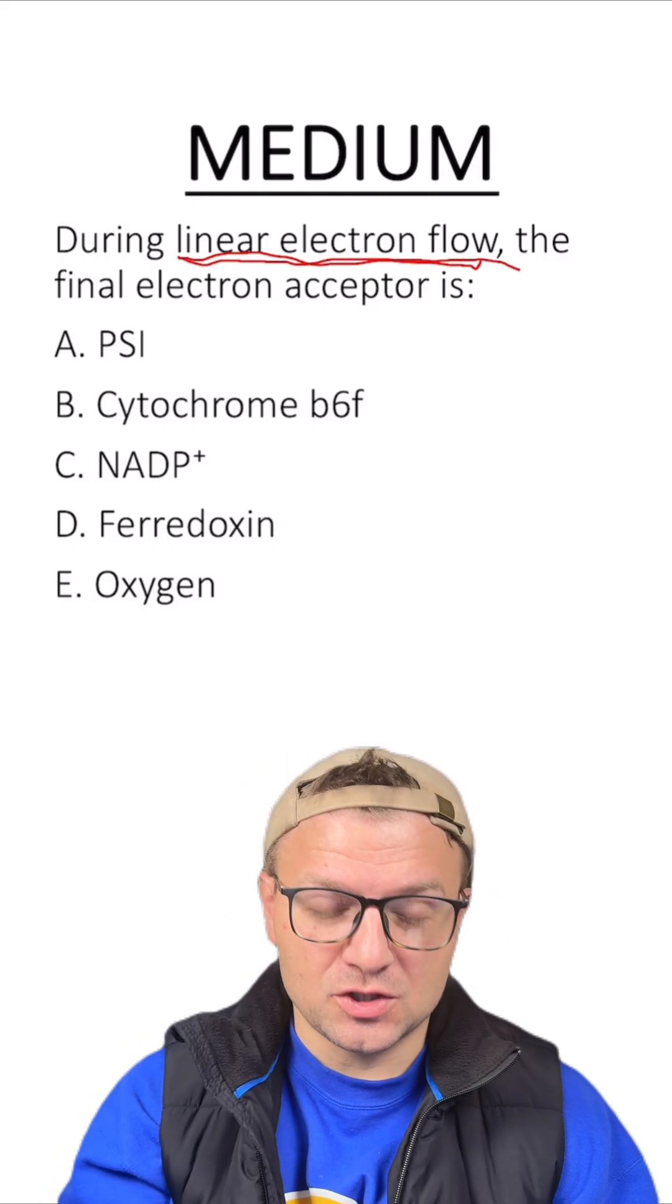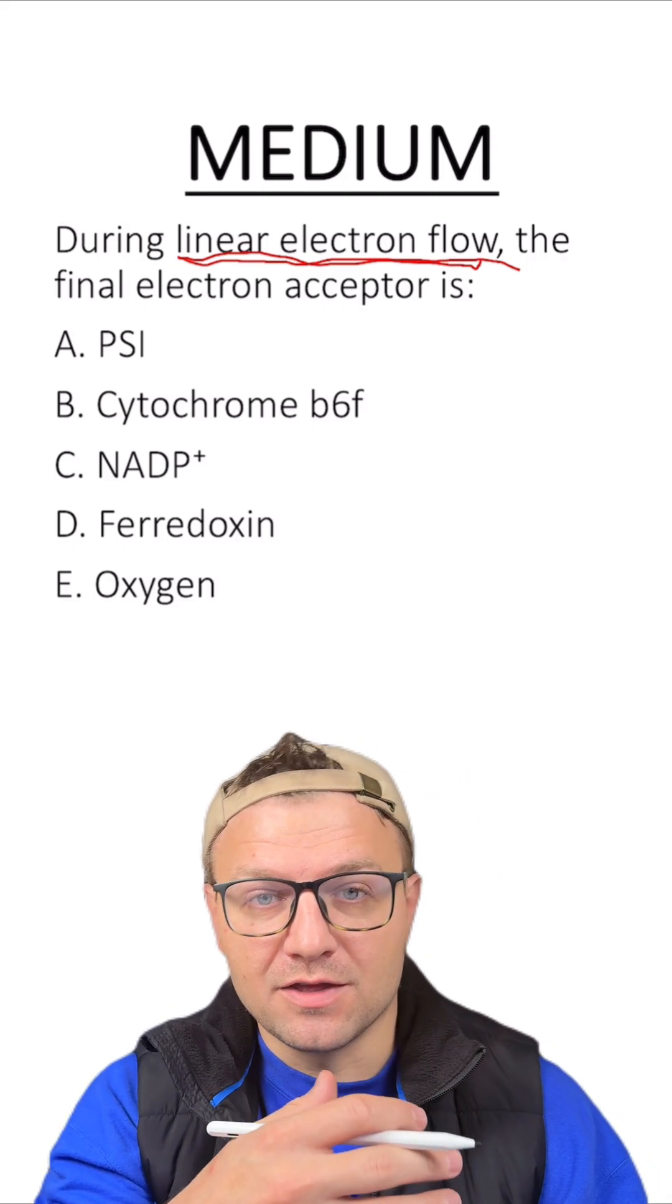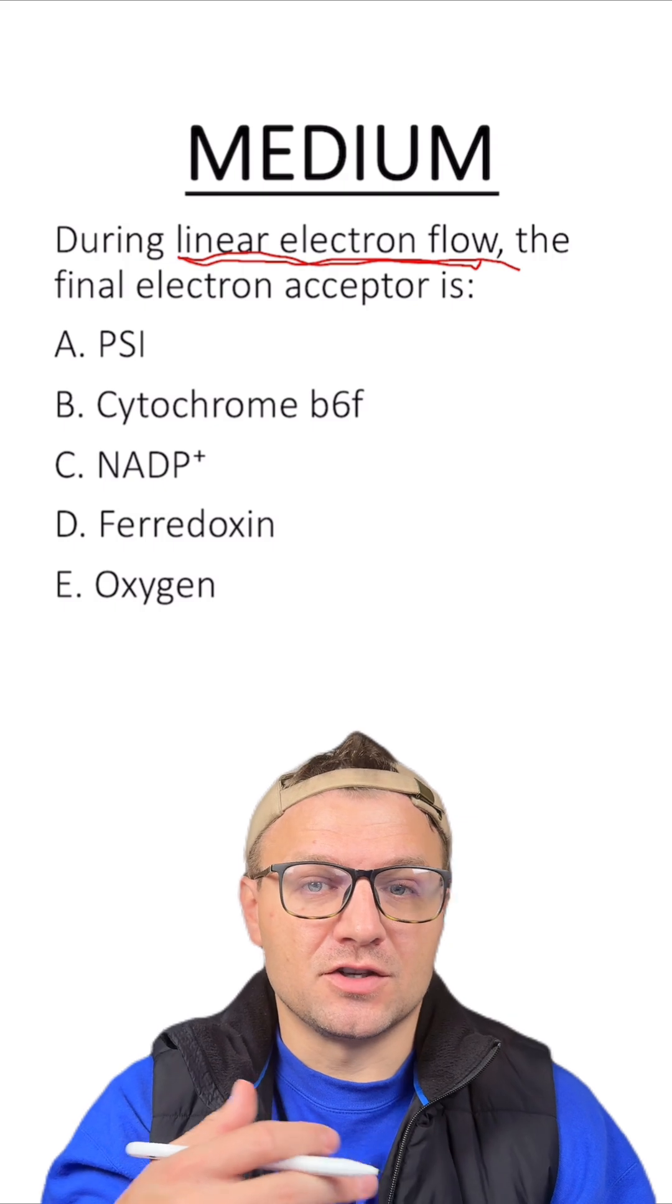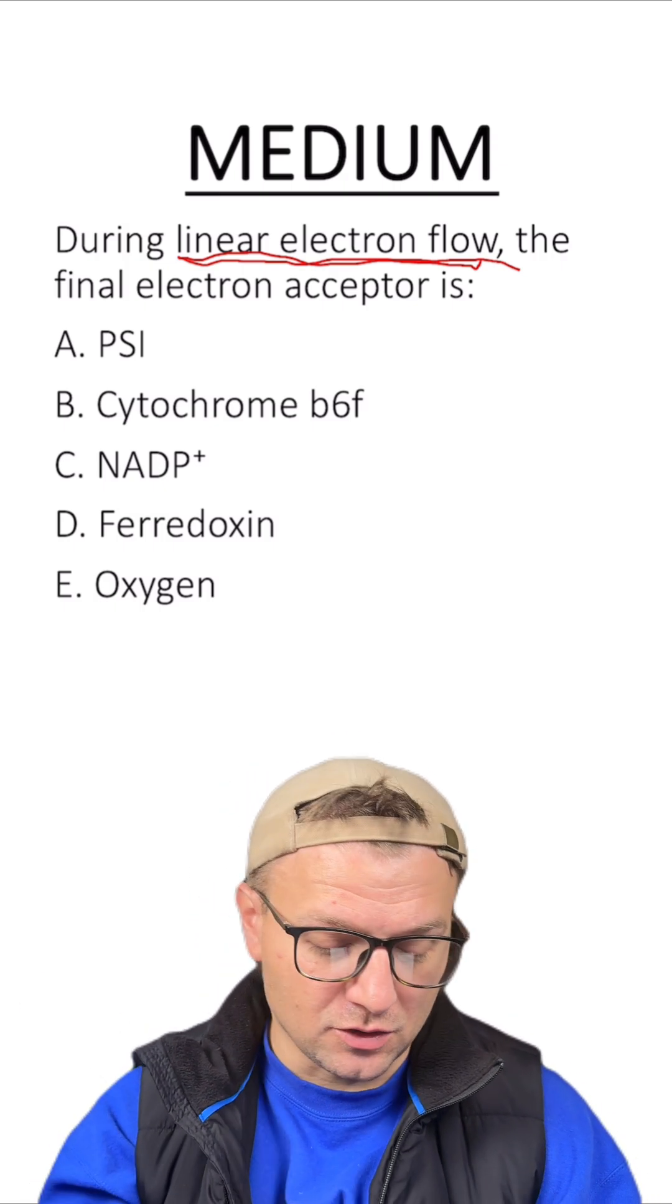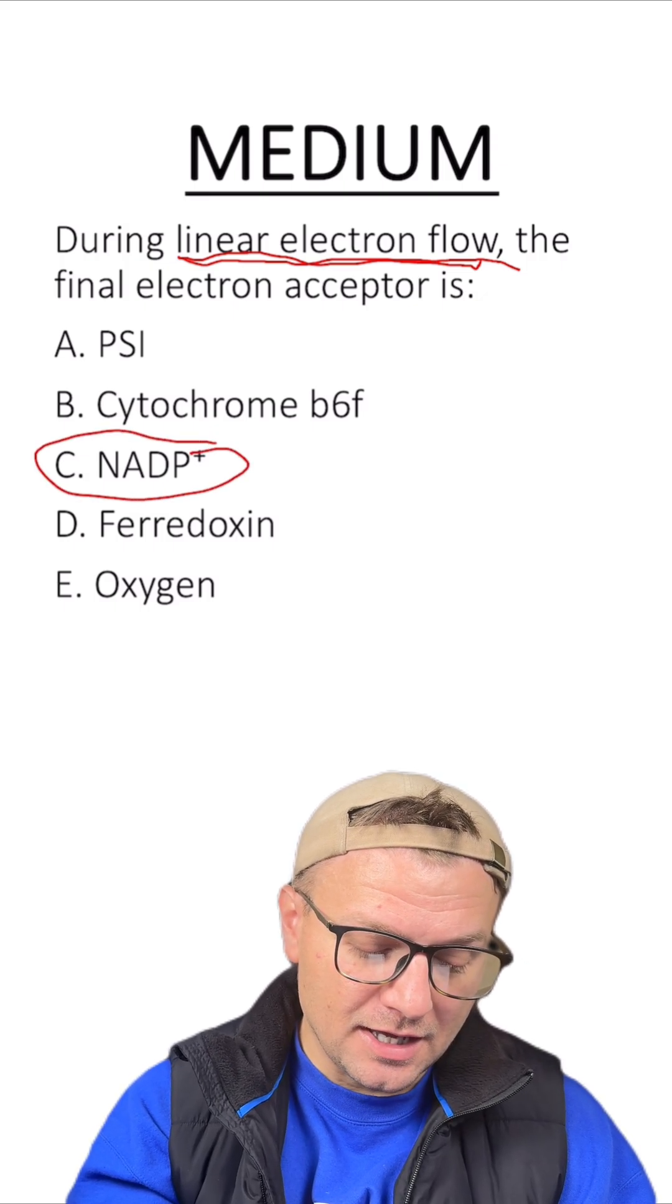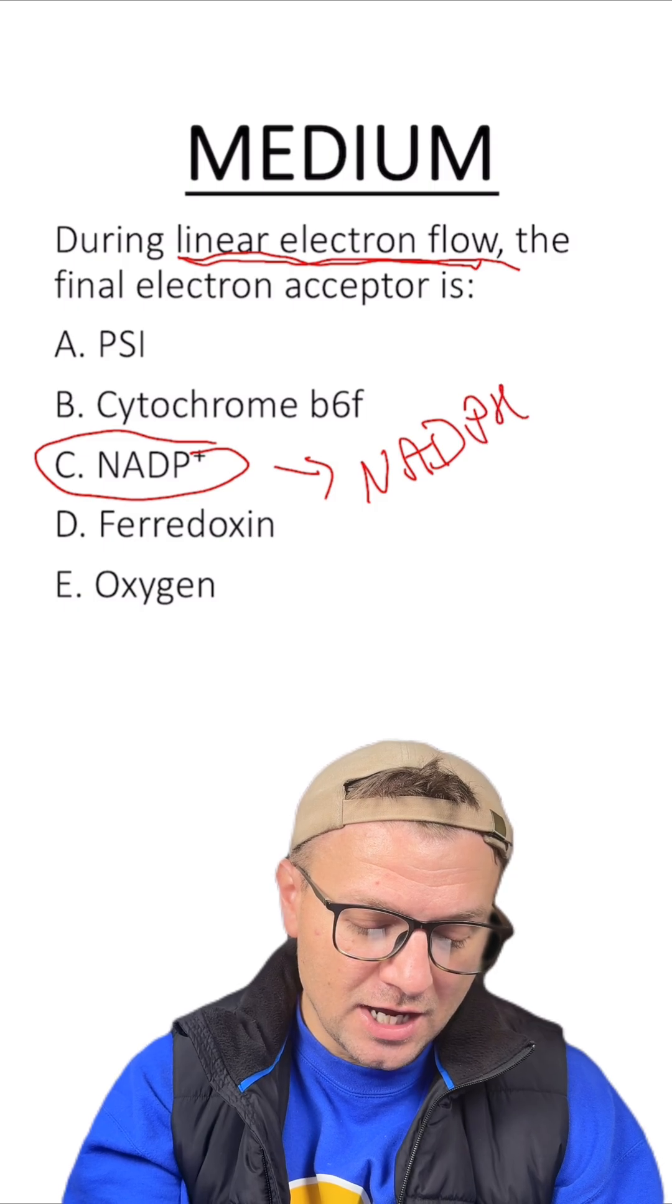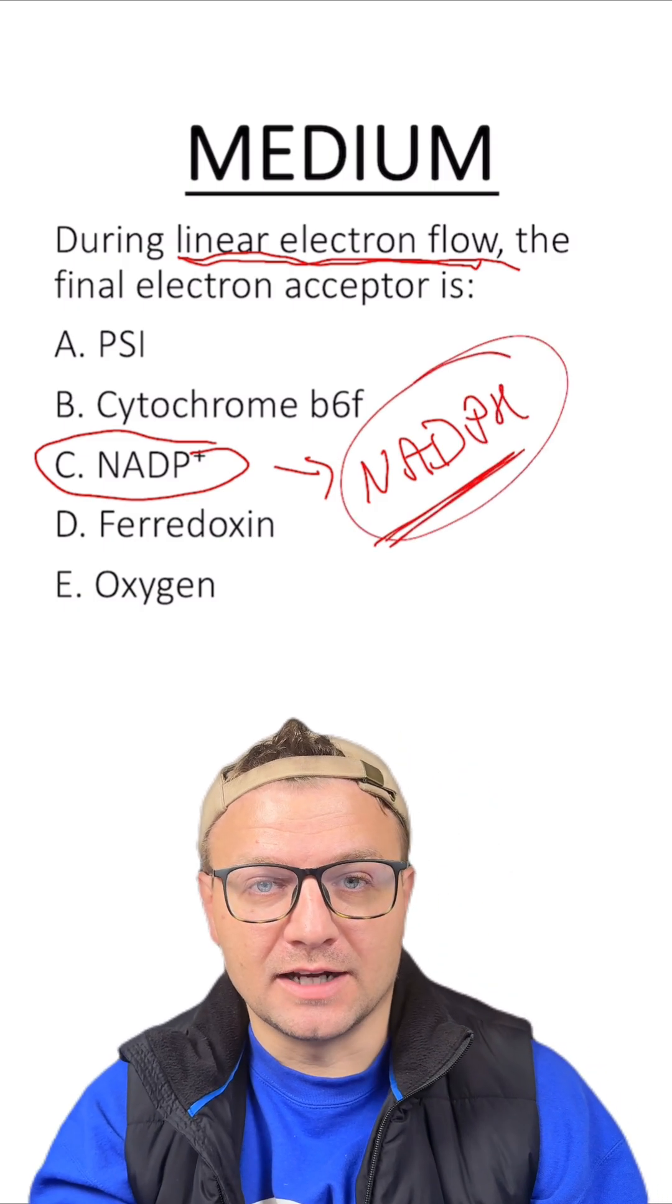Remember during the electron transport chain, the electrons are going to move from Photosystem II through the other electron acceptors to Photosystem I, and they're going to be dumped off to one specific molecule. That specific molecule is known as NADP+. That's going to become NADPH, and that's one of the main products of the light-dependent reactions.